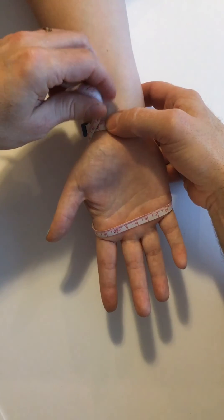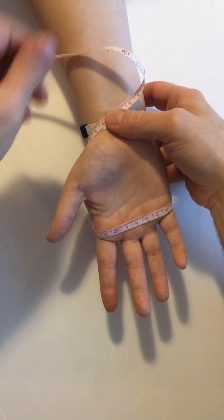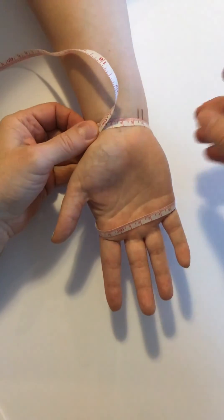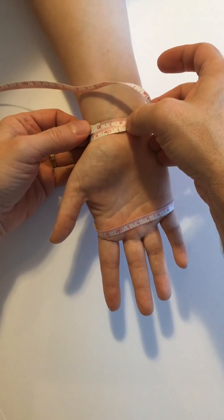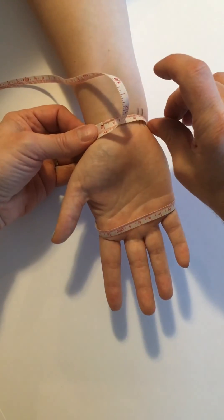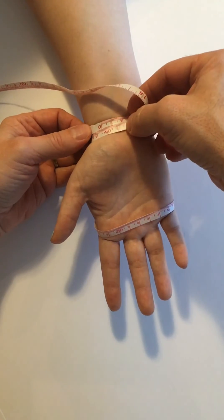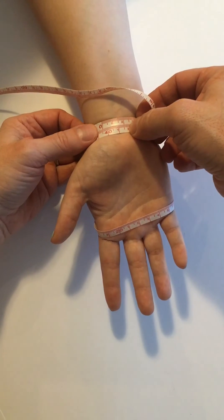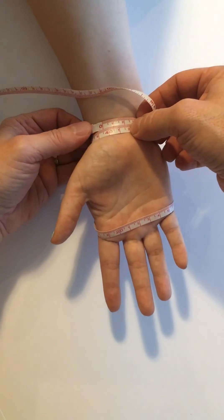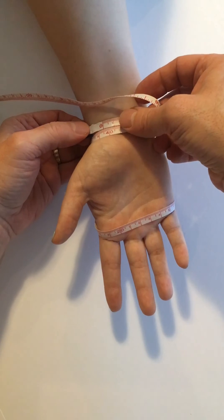Once we're there we'll line our tape up with our zero point where we started and once we've done that you just hold it snug. You don't have to pull it really tight, you don't want to squeeze any volume out of the hand because that will alter your measurement.